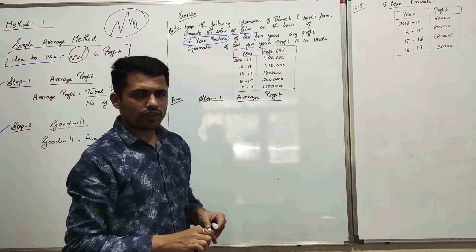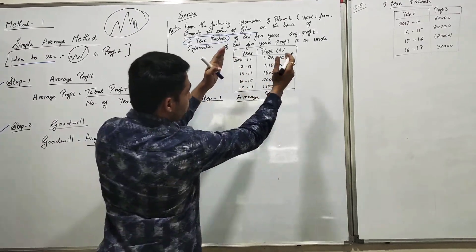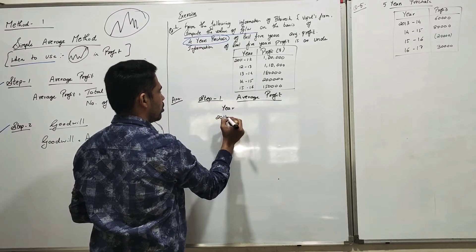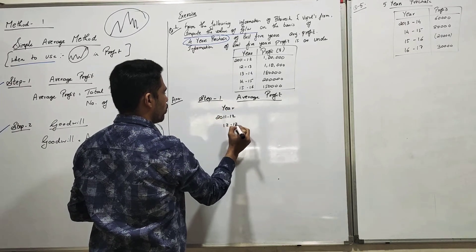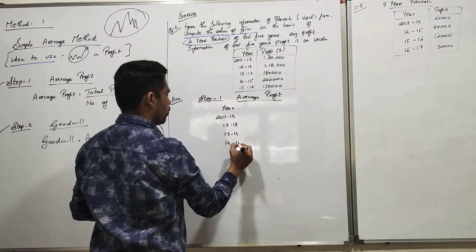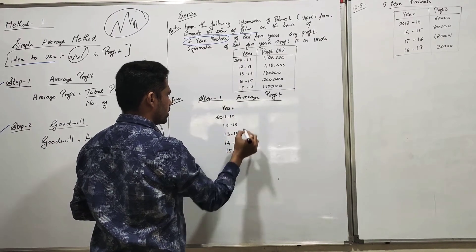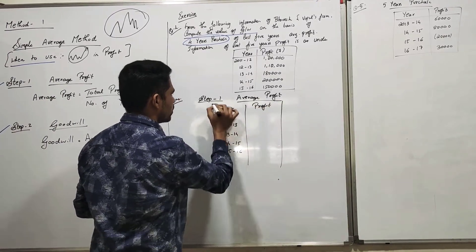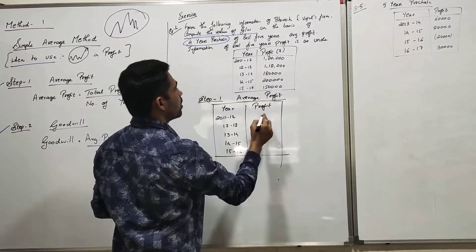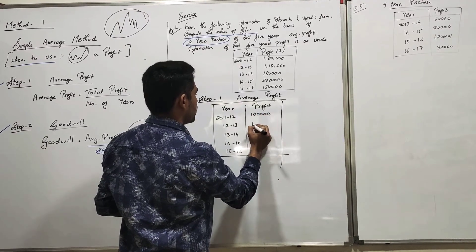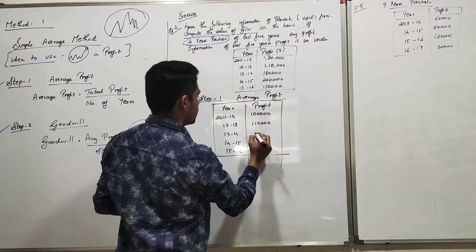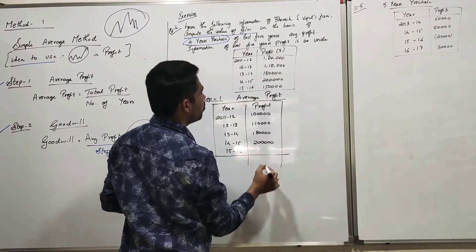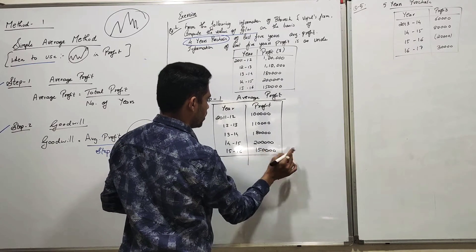Step one is Average Profit. To find the average profit, first copy down the table: years 2011-12, 2012-13, 2013-14, 2014-15, and 2015-16. The second column is Profit: one lakh, one lakh ten thousand, one lakh eighty thousand, two lakh, and one lakh fifty thousand.